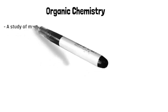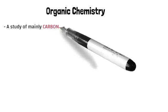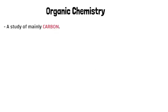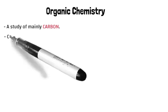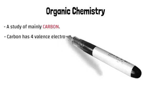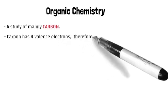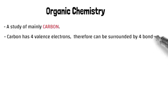Organic chemistry is mainly a study of carbon. Carbon is our main focus, and carbon is very important in so many ways, as we've learned in previous grades. Carbon has four valence electrons, and it bonds covalently. And therefore, it's surrounded by four bonds.